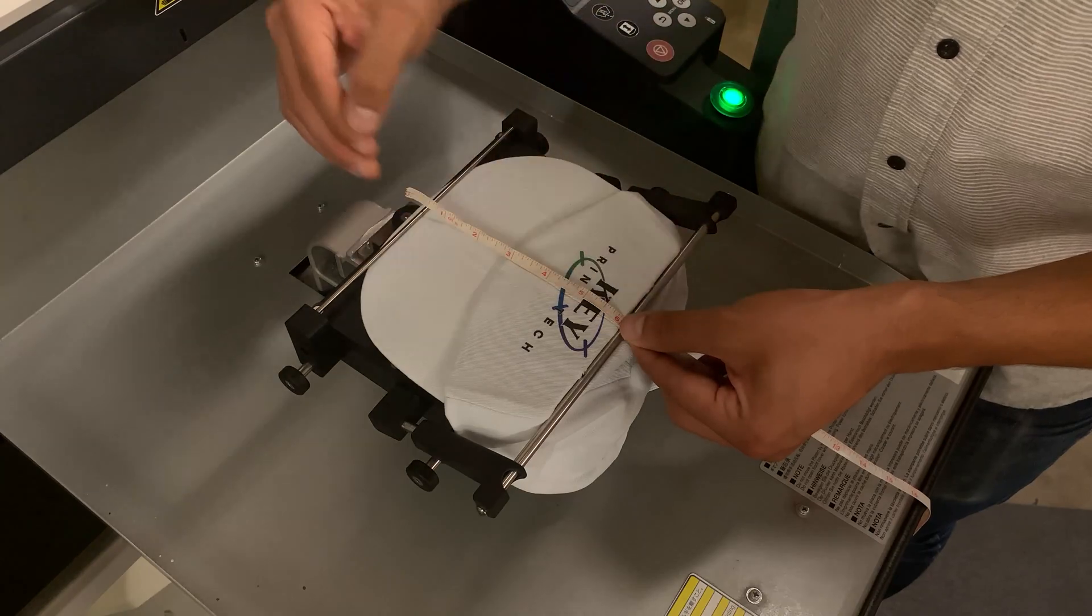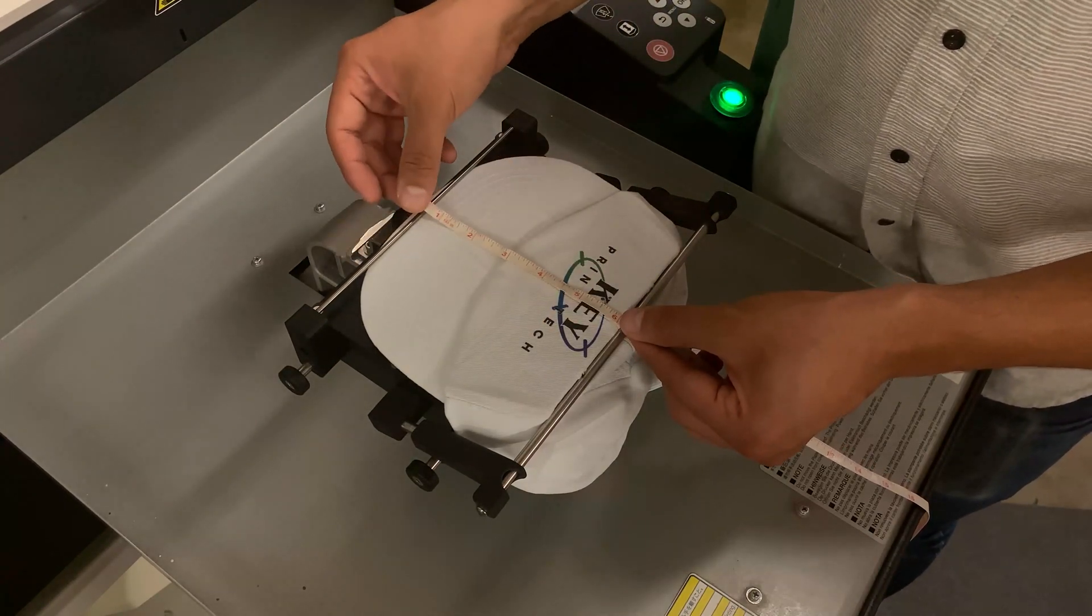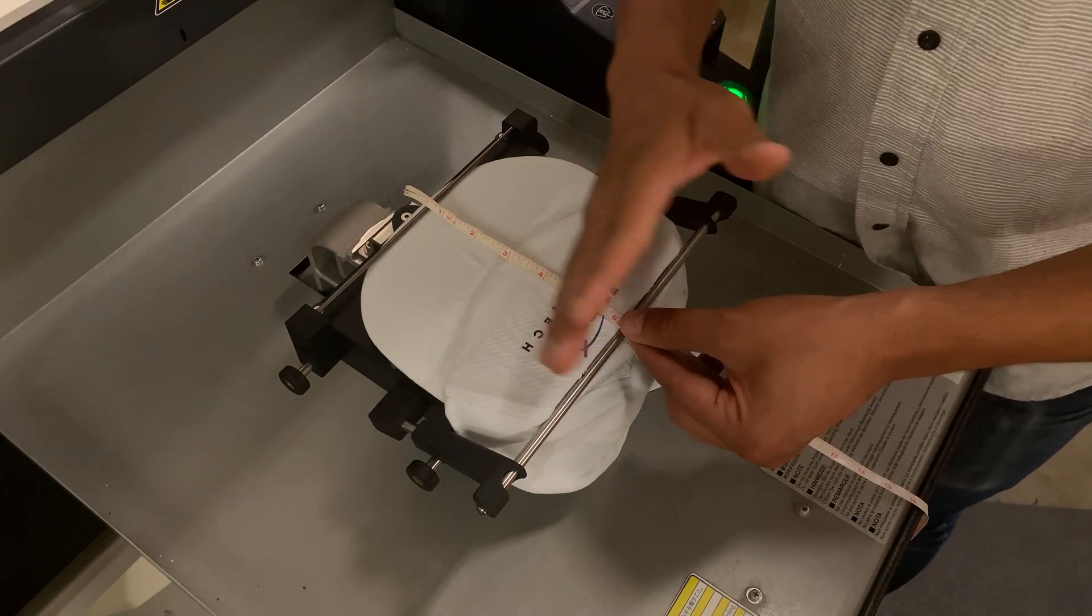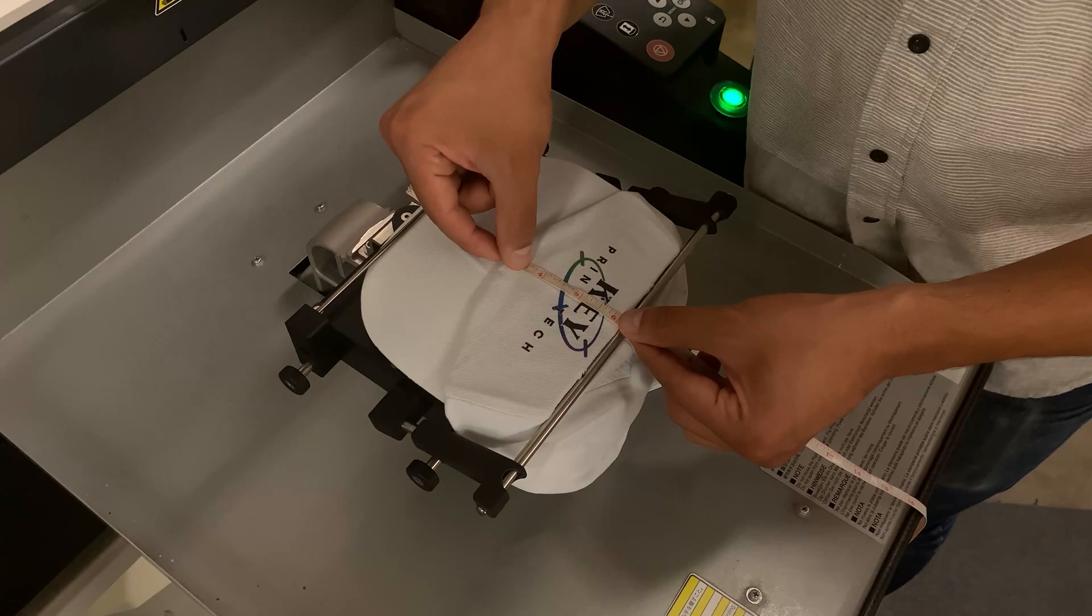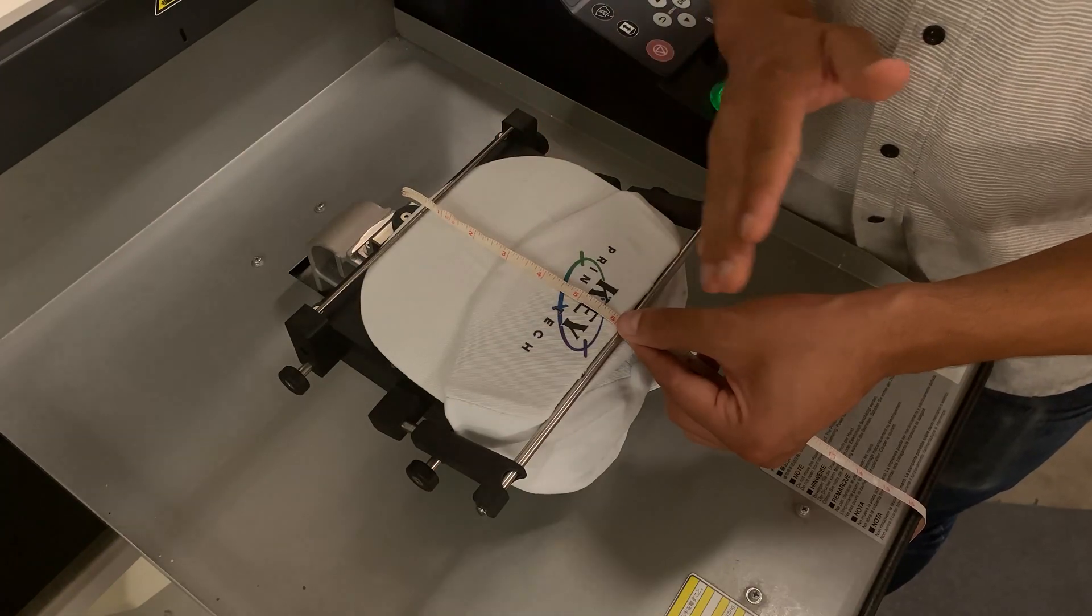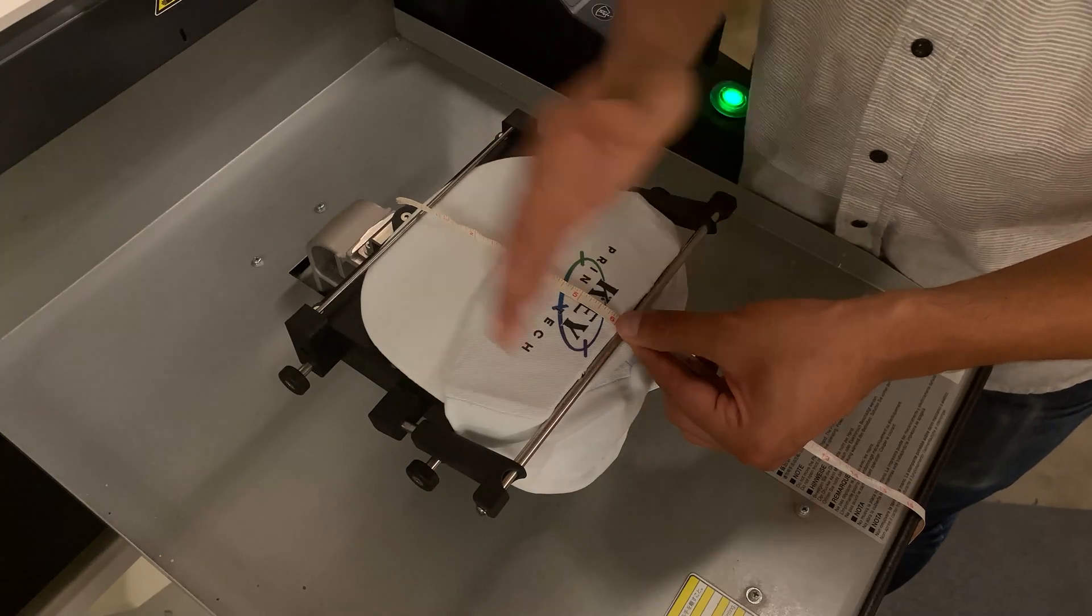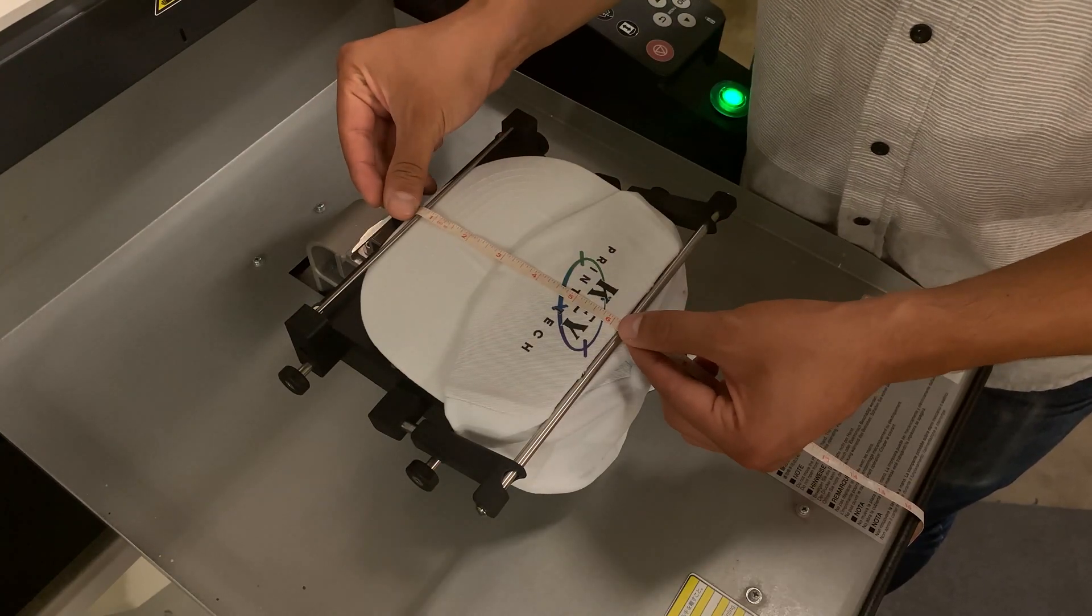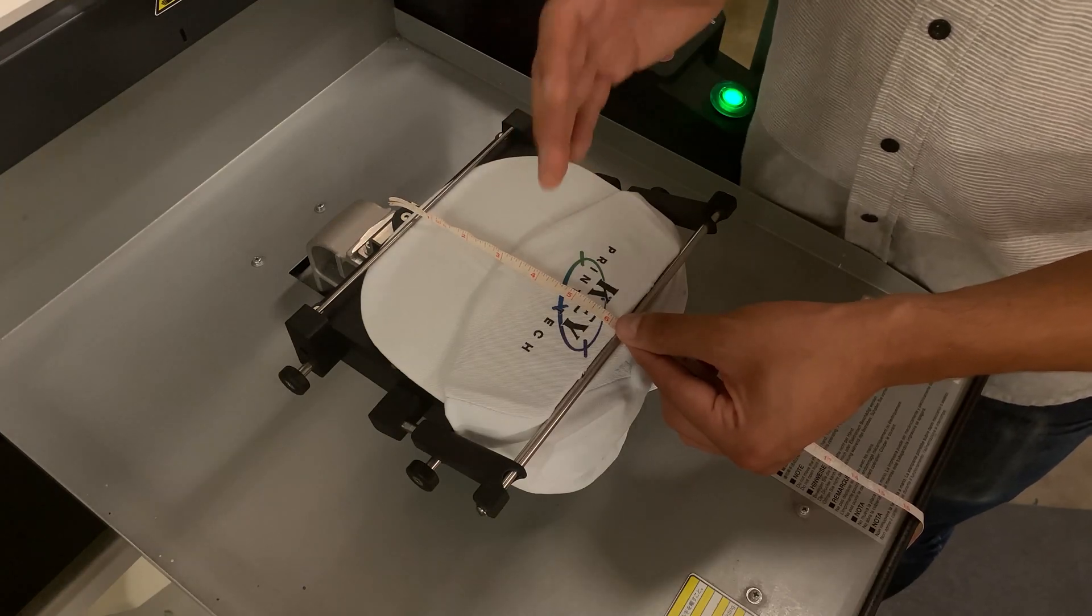But let's say for example that you wanted to print a little lower next time, maybe you wanted it to start down at three and a half inches. What you would do is move it down in the software down to the three and a half inch line, and then it's going to start printing up from there. But the overall goal of this is you want to know exactly where the artwork is going to land before you print your first hat.